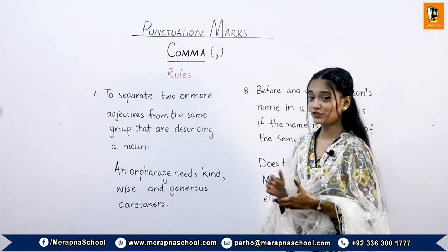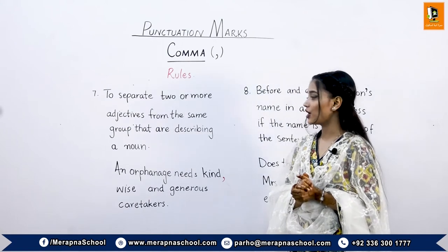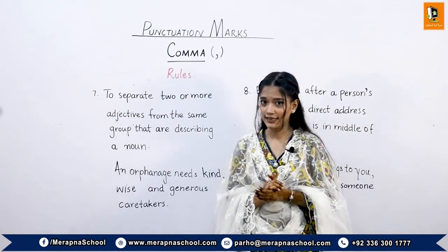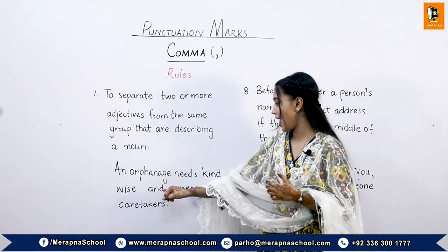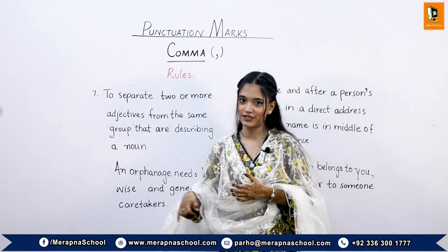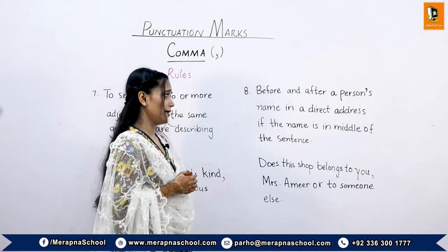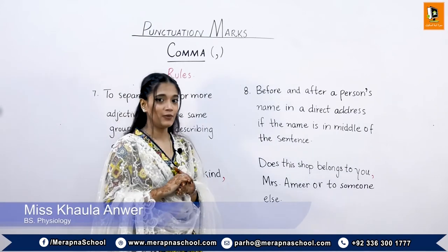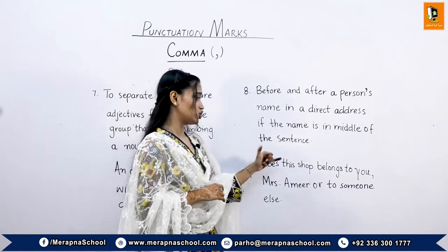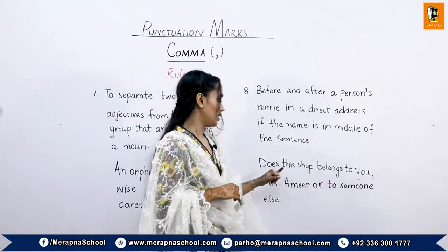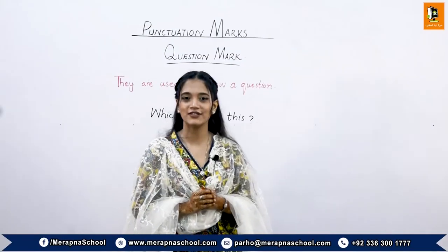The seventh rule is to separate two or more adjectives from the same group that are describing a noun. The eighth rule is before and after a person's name in a direct address if the name is in the middle of the sentence — for example, 'Does this shop belong to you, Mrs. Amir, or to someone else?'